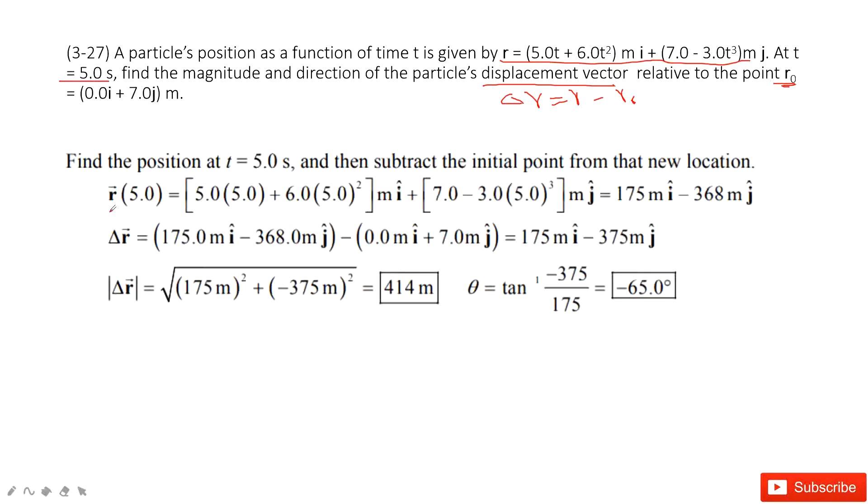We get the displacement. This is how we solve it. First, we input t equal to 5 seconds to get the position at this time, which is still in i-component and j-component. Then we can get the displacement.